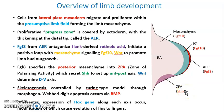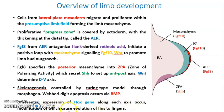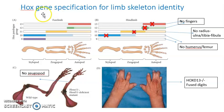Skeletogenesis is controlled by a Turing-type model through morphogens, and interdigital digit apoptosis occurs via BMP signaling. Differential expression of Hox genes occurs along each axis, and modification of which caused the evolution from fins to fingers.